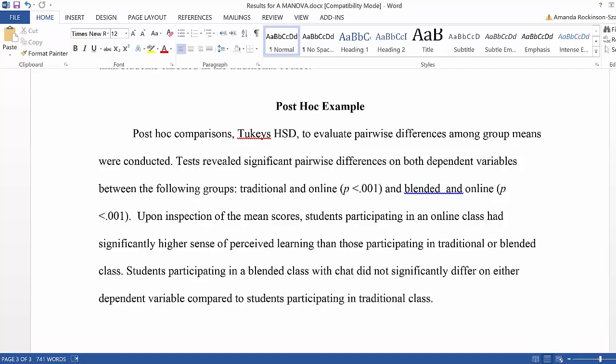Here you'll see, I have an example. It says post-hoc comparisons, Tukey's HSD, and I chose Tukey's because the assumption of homogeneity of variance and homogeneity of variance covariance was not violated. So I used Tukey's to evaluate the pairwise difference among the group means.